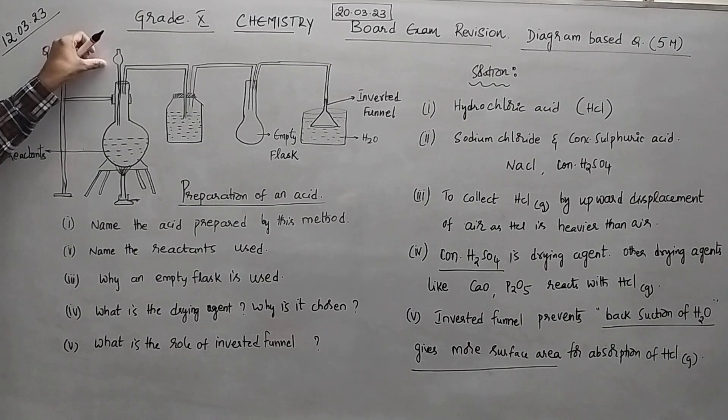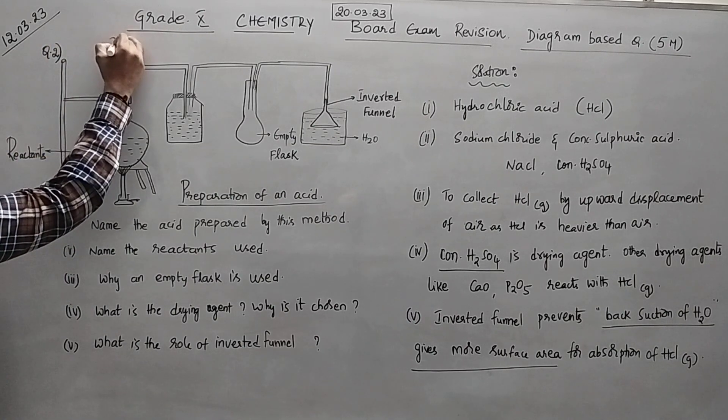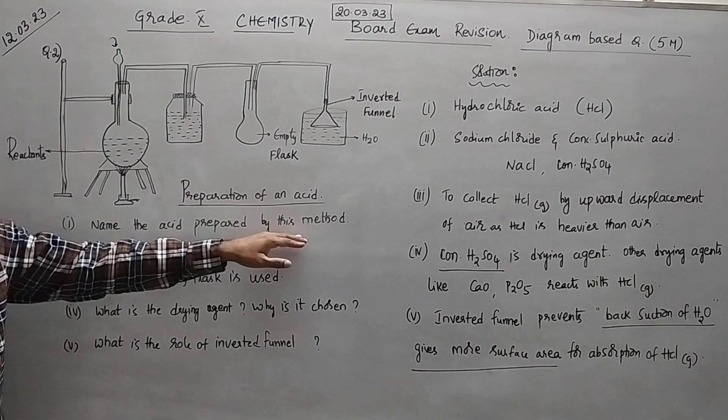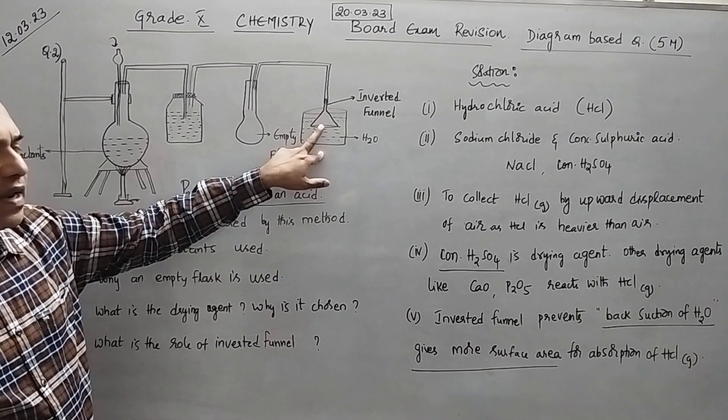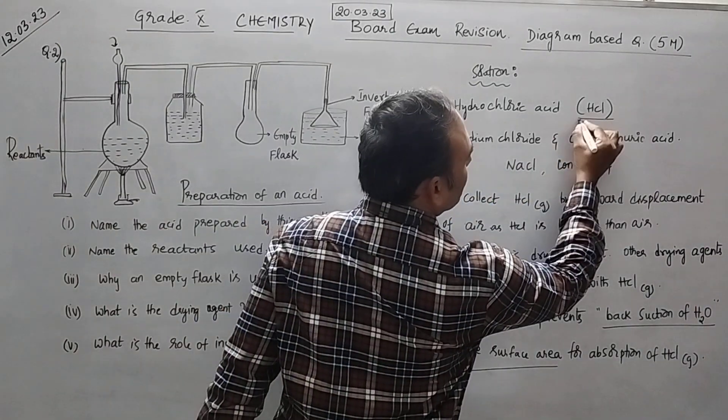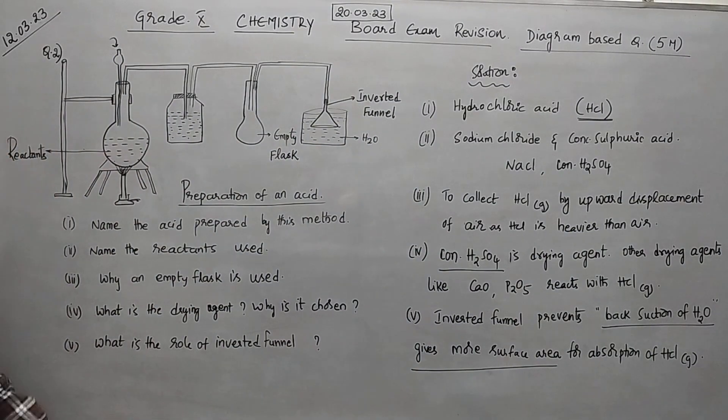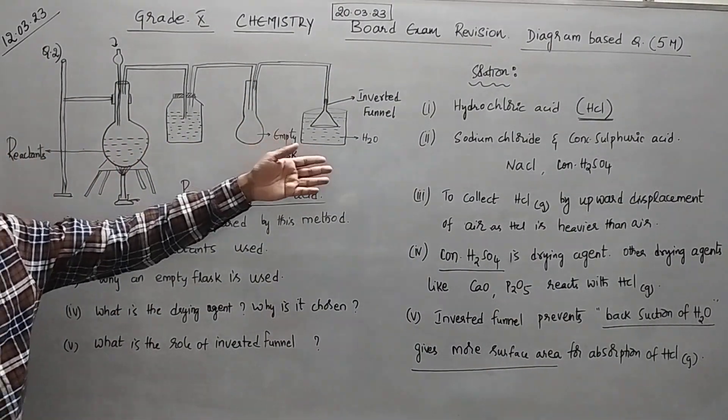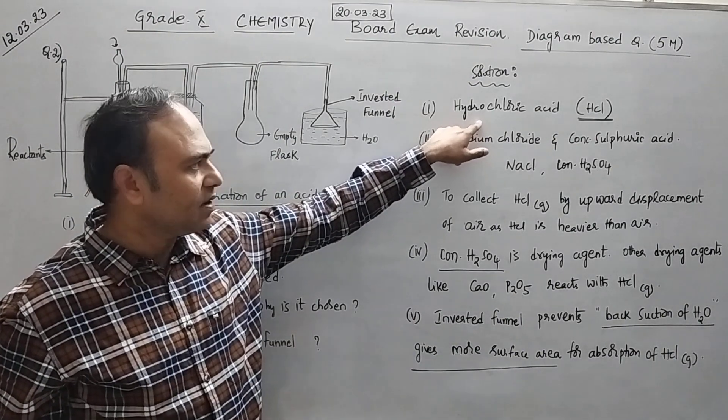So here they have taken thistle funnel through which liquid reagent is added. Now the first question is name the acid prepared by this method. See whenever you see inverted funnel arrangement immediately you can identify that it is HCl preparation. So HCl gas is prepared and then it is soluble in water. So hydrochloric acid HCl.